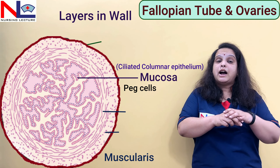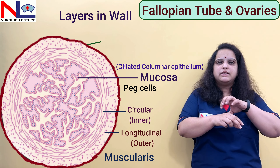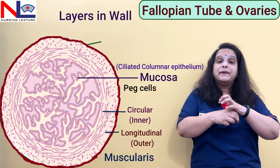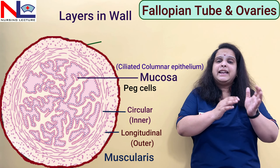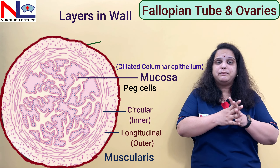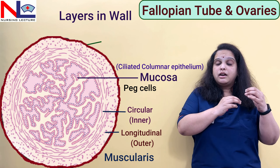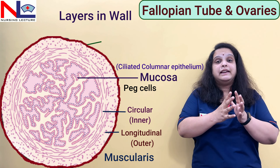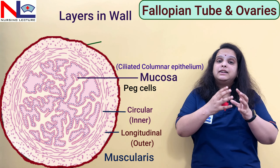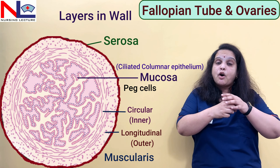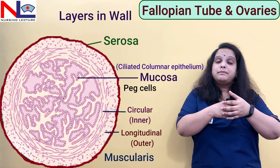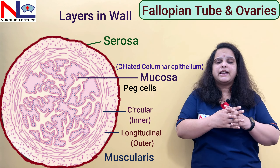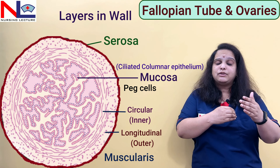Outer to the mucosa is the muscularis, which has two muscle fiber layers: the outer one is arranged longitudinally and the inner one is in a circular manner. These muscular fibers allow peristaltic movement and help to propel the mature gamete toward the ampullary part. Even the fertilized zygote is moved toward the uterine cavity by these ciliary and peristaltic movements. The outermost lining of the fallopian tube is the serosa, which is formed by the visceral peritoneum. So the layers from inner to outer are: mucosa, muscularis, and serosa.